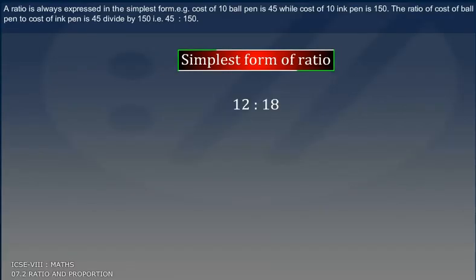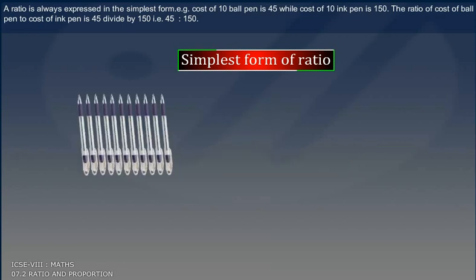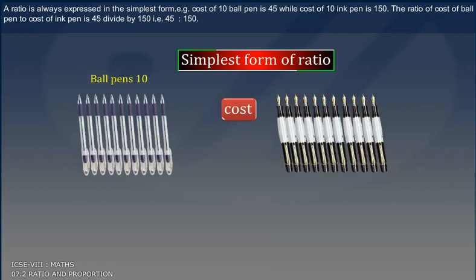A ratio is always expressed in the simplest form. For example, cost of 10 ball pen is 45, while cost of 10 ink pen is 150.